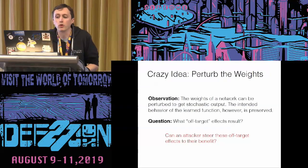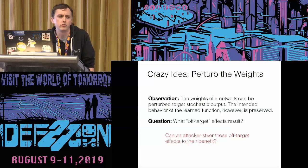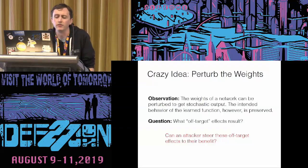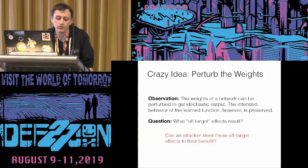Let's build in our backdoor by perturbing the weights of the network. Recall basic neural network 101: when we learn an approximate function using a neural network, what we're doing is tuning the weights of that network. If we think of a network as a connected graph of different neurons, those edges in the graph that connect the different vertices — which represent the neurons — have a specific weight value attached to them. And when we train these networks using gradient descent and backpropagation, we're changing those values.